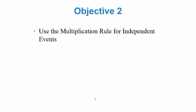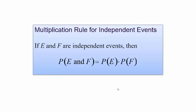The multiplication rule for independent events: if E and F are independent and I want the probability that both E and F happen, that equals the probability of E multiplied by the probability of F. Just as 'or' implies addition, 'and' implies multiplication.